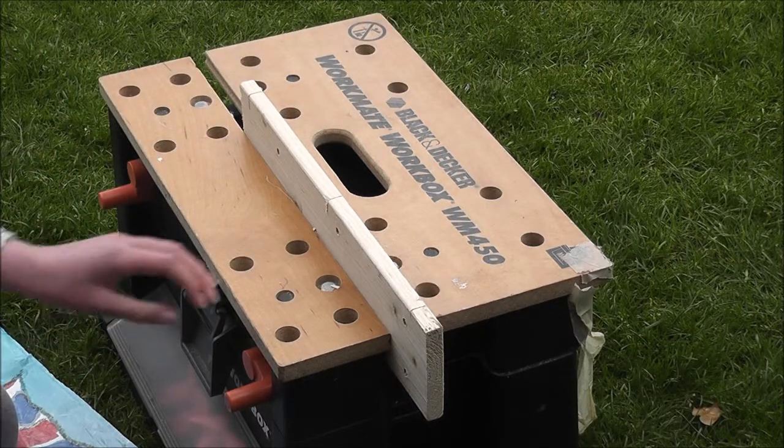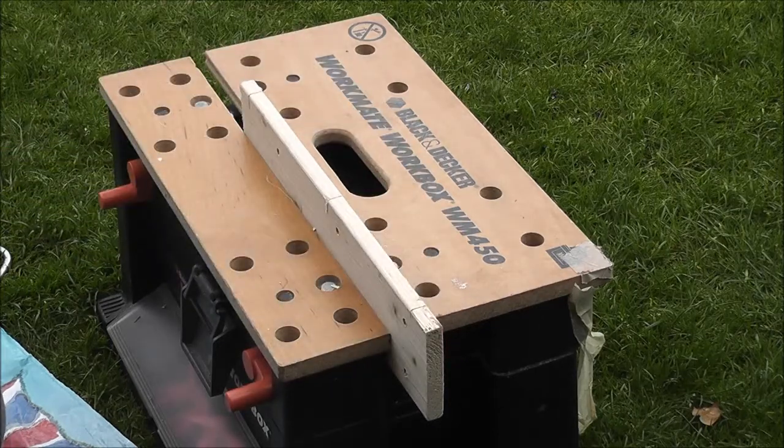After sawing wood, rough edges can be removed with sandpaper so the risk of splinters is reduced.